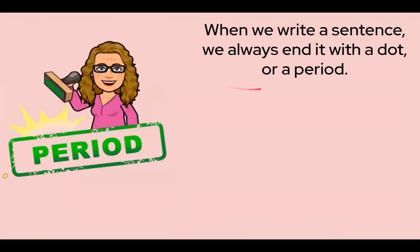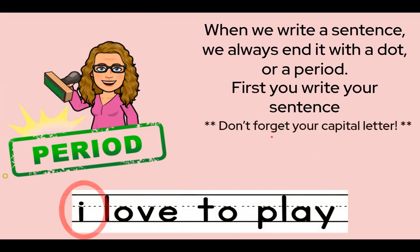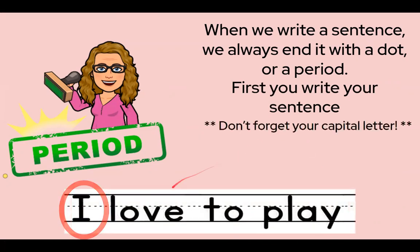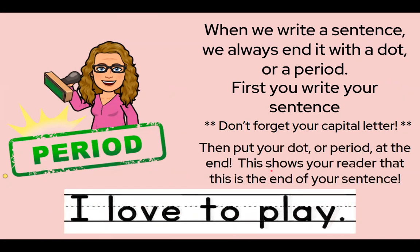When we write a sentence we always end it with a dot or a period. First you write your sentence — for example, 'I love to play.' Oh, don't forget your capital letter. 'I love to play.'